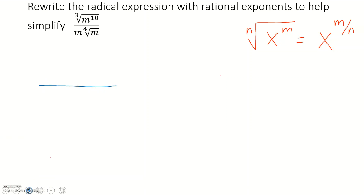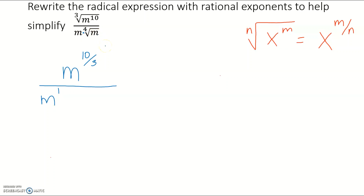Using that idea, let's rewrite each of those. In the numerator we have the cube root, so that would be the denominator of our fraction, and m is to the tenth power inside. So we rewrite the numerator as m to the 10 over 3 power. In the denominator of our fraction we have m — that m technically has an exponent of 1 — and the 4 is the root, so we'd have m to the 1/4 power.